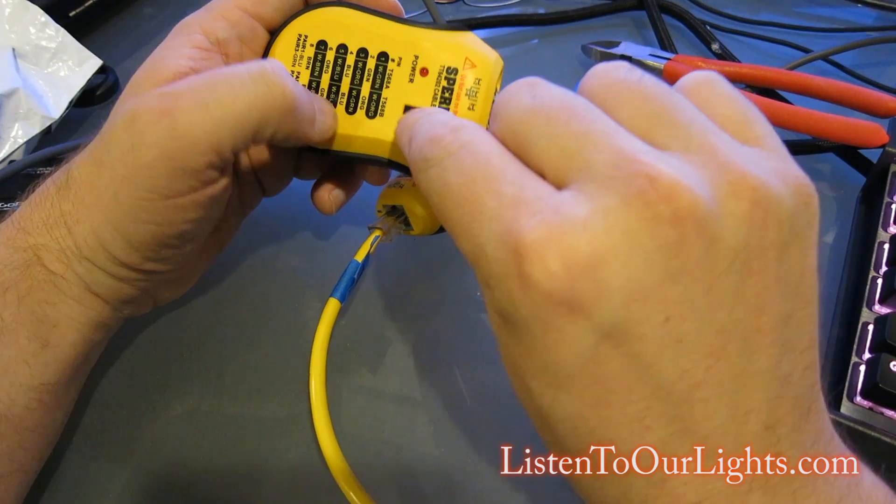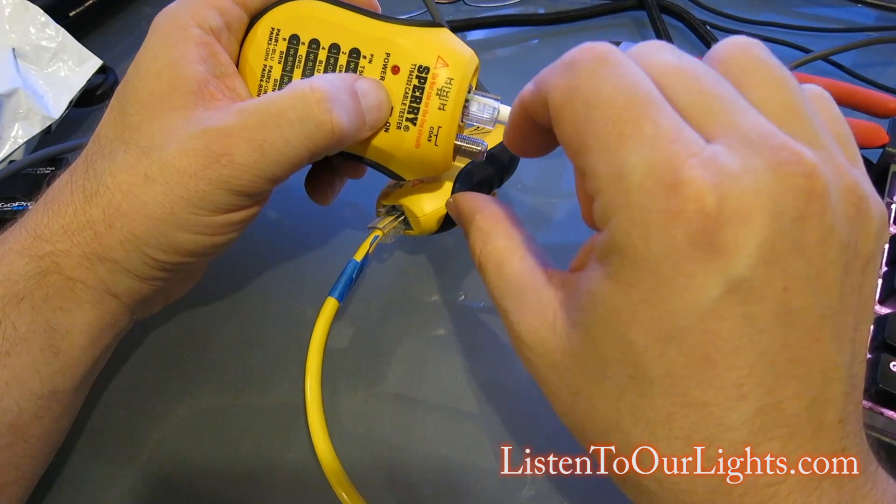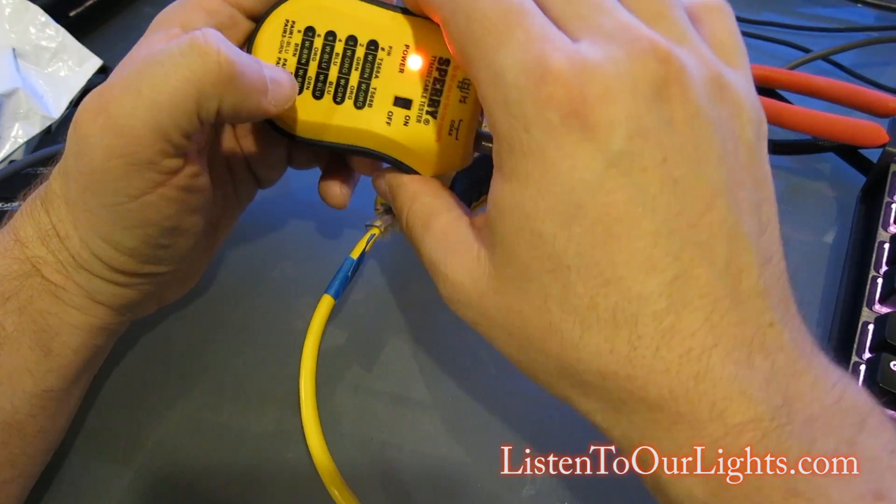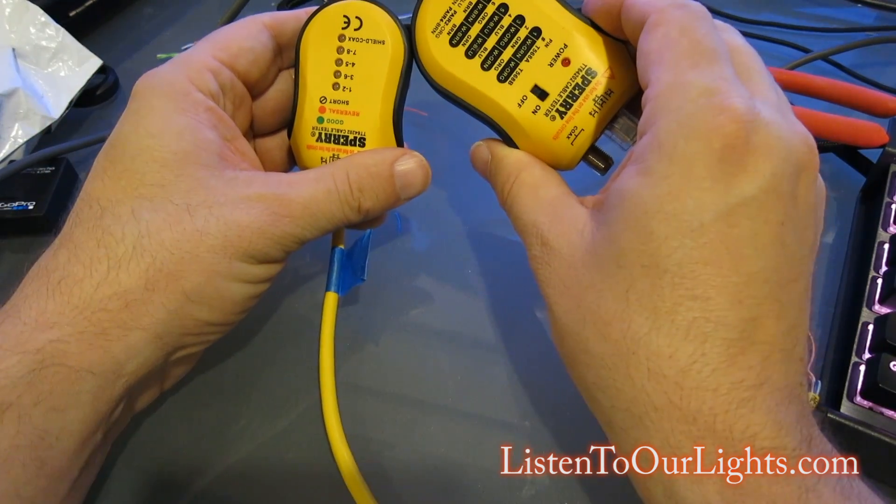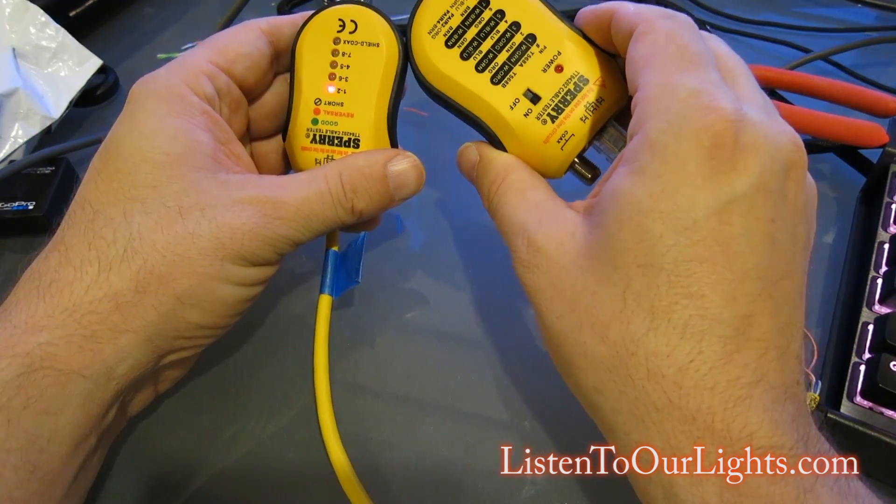And when he sends a signal, he's going to go 1, 2, through the pairs. And over here, I am seeing it show up on pairs 1 and 2.